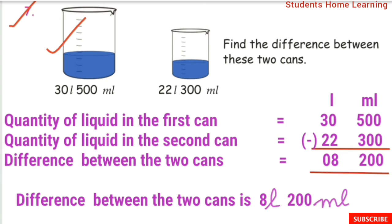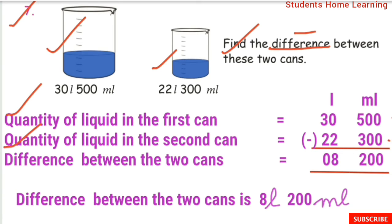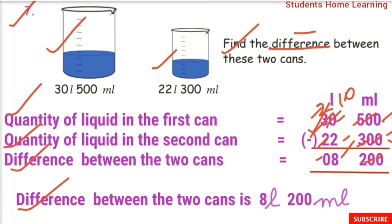Word problem 7: There are 2 cans. The 1st can has 30 liter 500ml of liquid, and the 2nd can has 22 liter 300ml of liquid. Find the difference between the 2 cans. Subtraction: 0 minus 0 is 0, 0 minus 0 is 0, 5 minus 3 is 2. Liter: 0 minus 2 requires borrowing; borrow gives 10 minus 2 is 8, 2 minus 2 is 0. Difference between the 2 cans is 8 liter 200 ml.